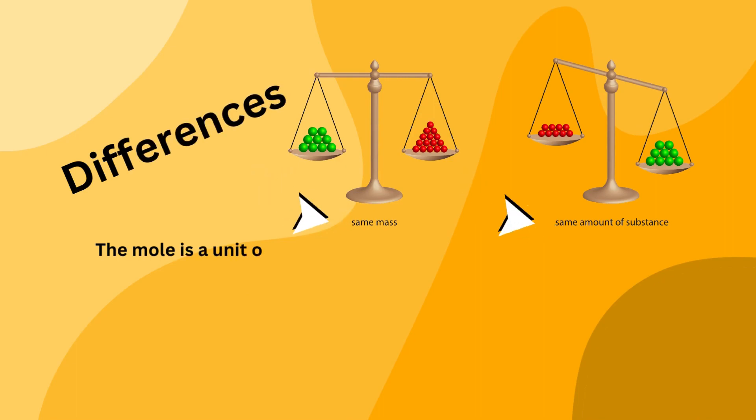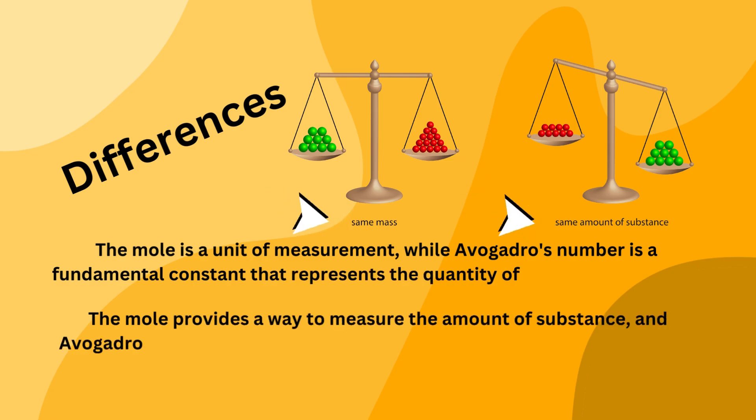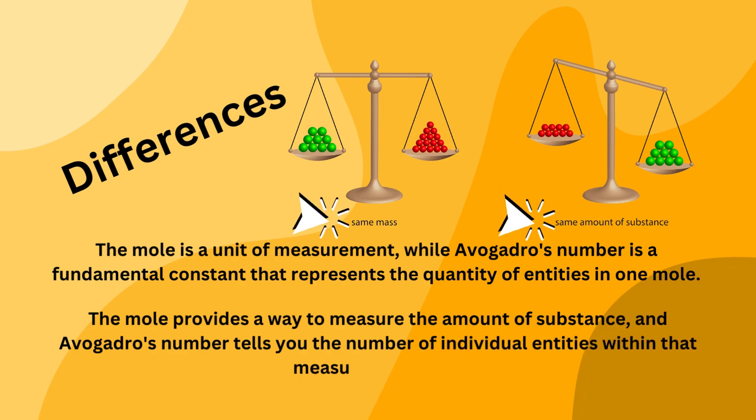Differences. The mole is a unit of measurement, while Avogadro's number is a fundamental constant that represents the quantity of entities in one mole. The mole provides a way to measure the amount of substance, and Avogadro's number tells you the number of individual entities within that measured quantity.